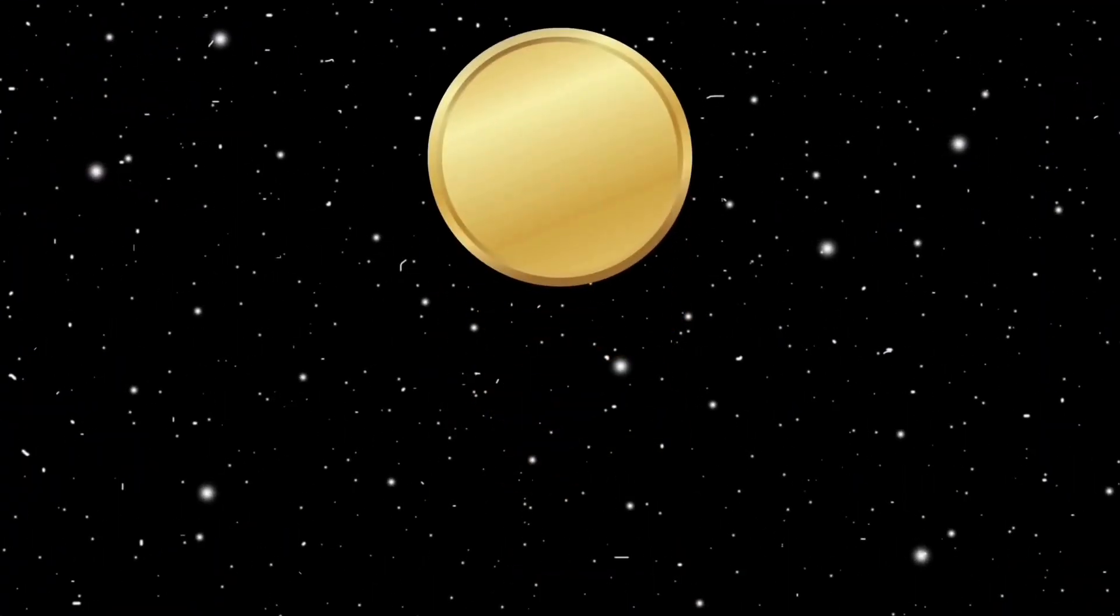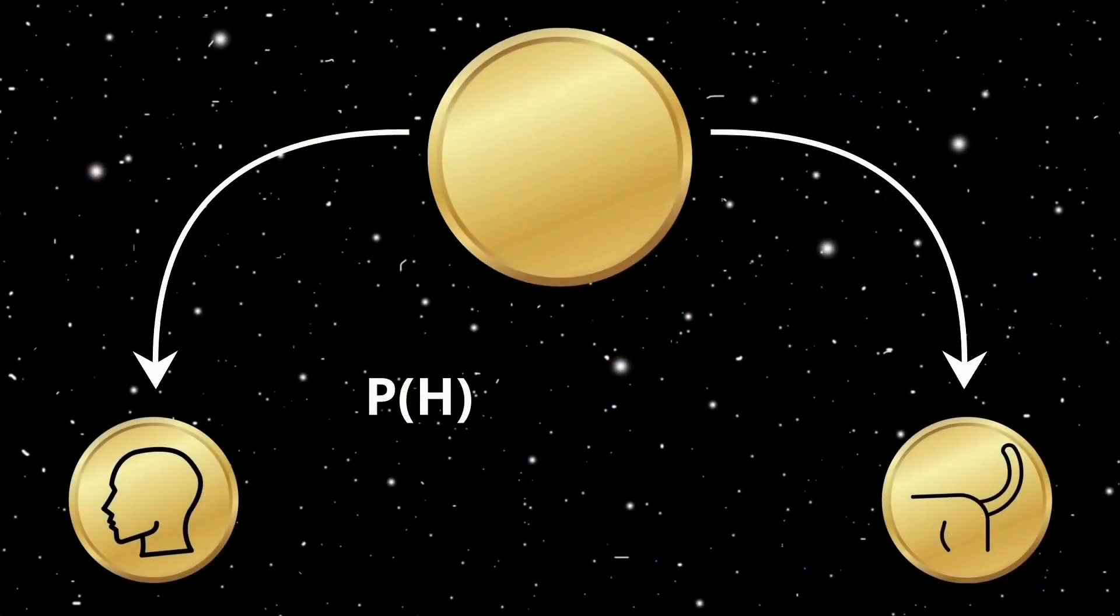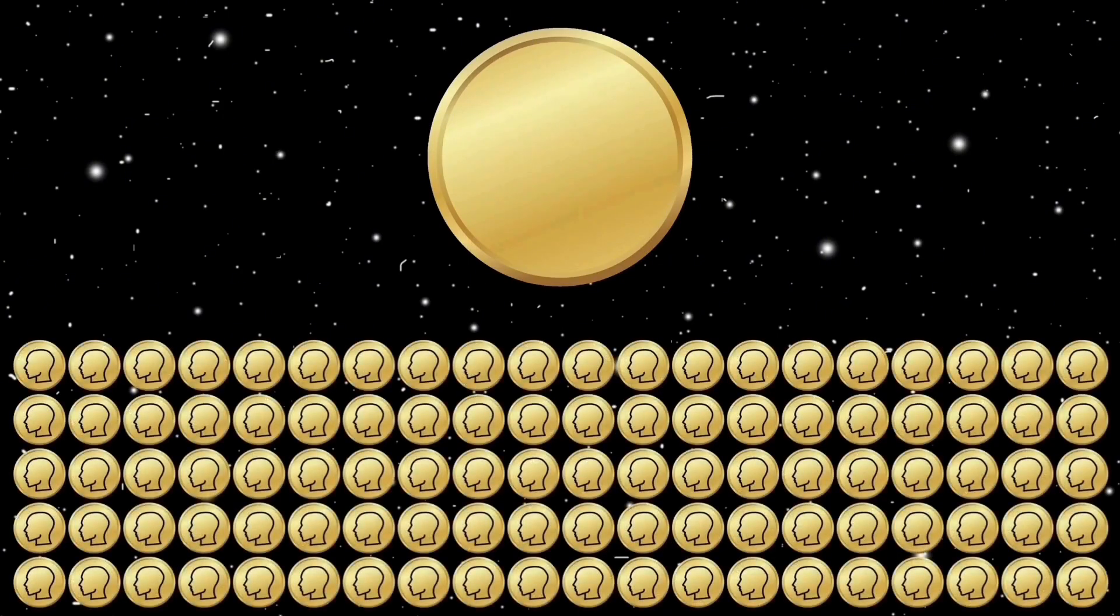Suppose you want to toss a coin once. The probability of it being a head is half equals 0.5. So, out of the two possibilities, heads or tails, you can confidently say that the outcome is random. If you toss it 100 times, the probability of getting all heads is about 10 to the power minus 30. In other words, it's nearly impossible.